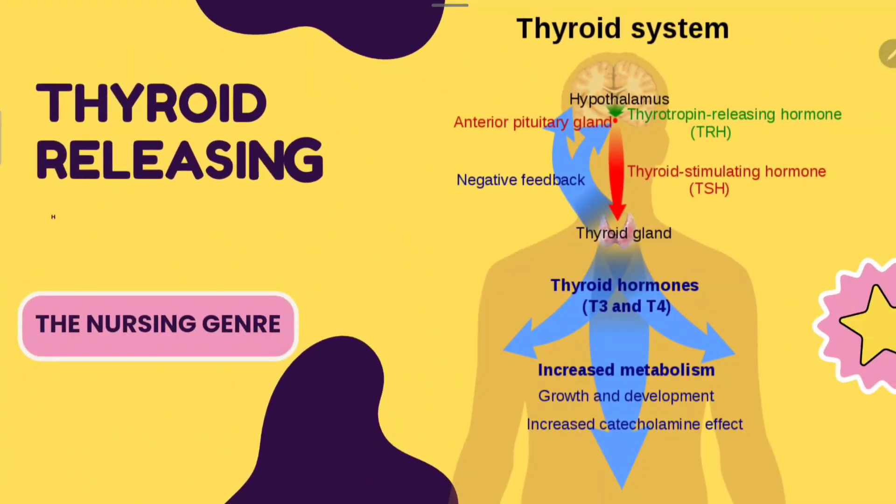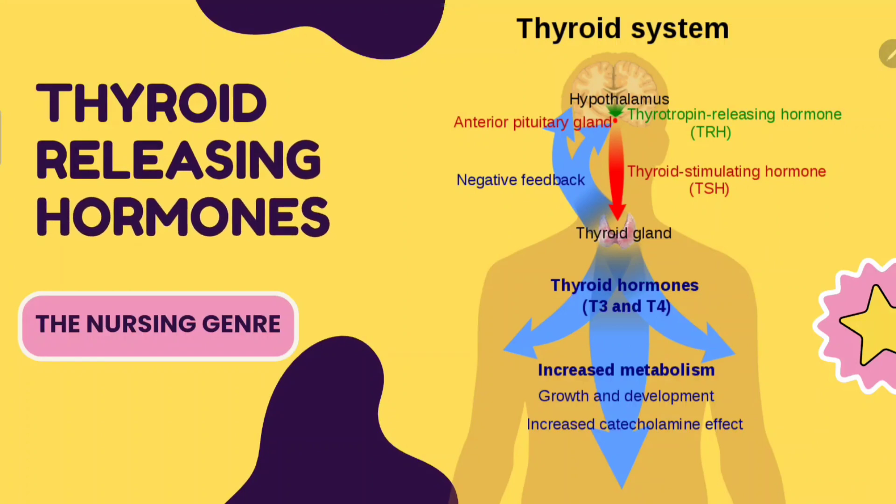Next, thyroid releasing hormones. These include thyrotropin releasing hormone, thyroid stimulating hormone, as well as T3 and T4.